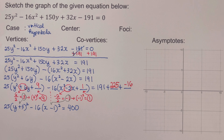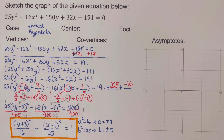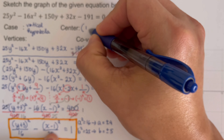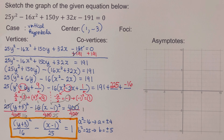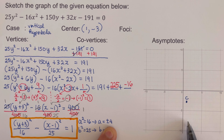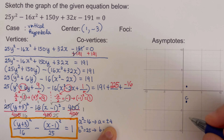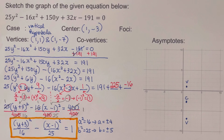We divide both sides by 400 and simplify. The y part is positive, so a squared equals 16 and b squared equals 25, meaning a equals 4 and b equals 5. The center is at (1, negative 3). We plot the center, then count 4 units up and 4 units down to find the two vertices, giving coordinates (1, 1) and (1, negative 7).